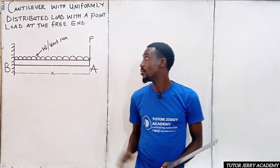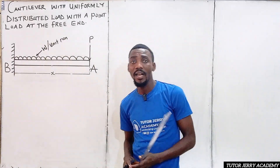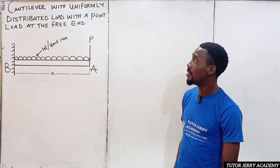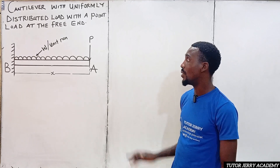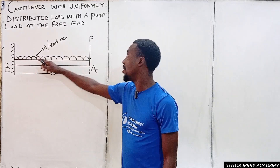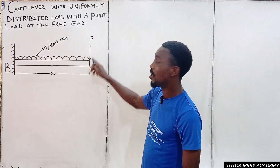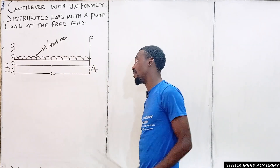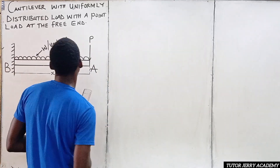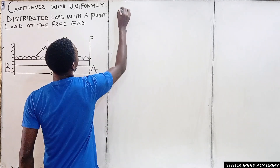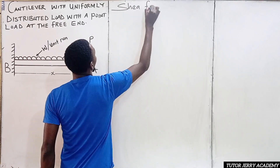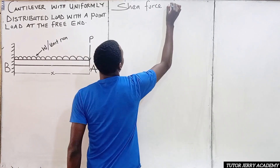Hello and welcome. Let's consider case number three: a cantilever with a uniform distributed load and a point load at the free end. We'll be going straight into calculating the shear force.